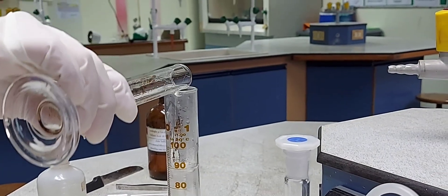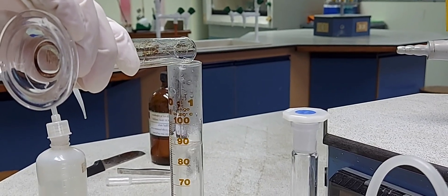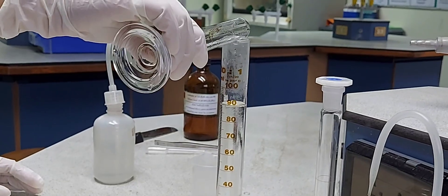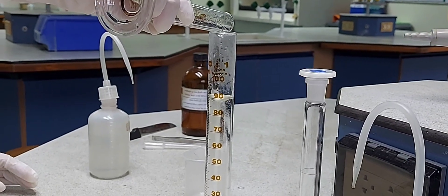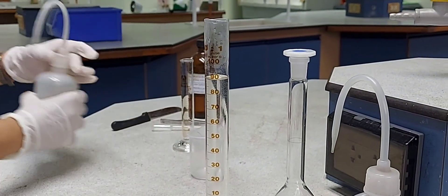So after adding the acid to about 70 ml water in the measuring cylinder, I will be transferring this acid into the graduated flask which is 250 ml capacity.